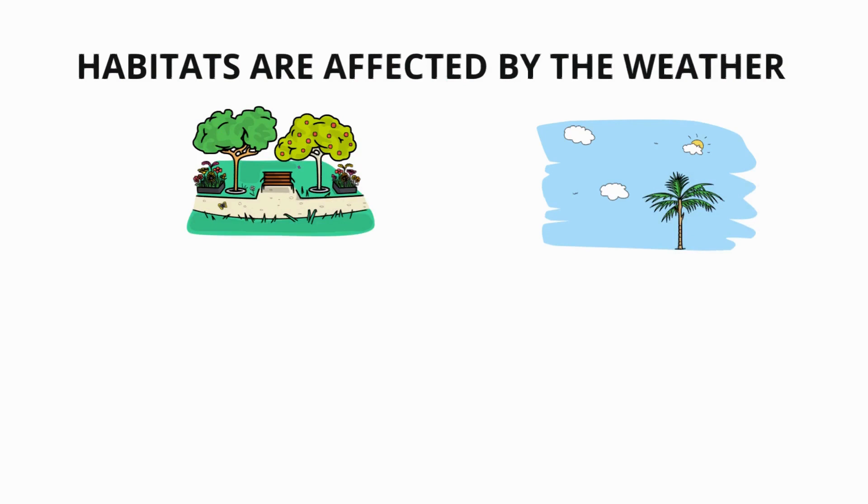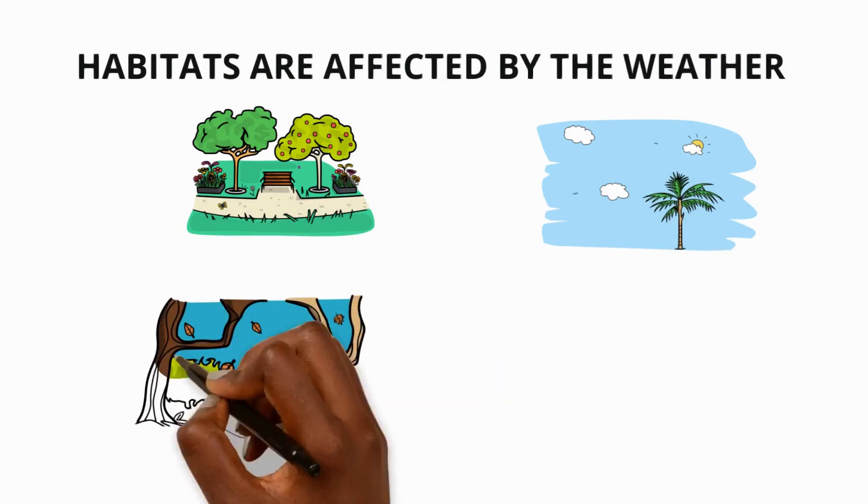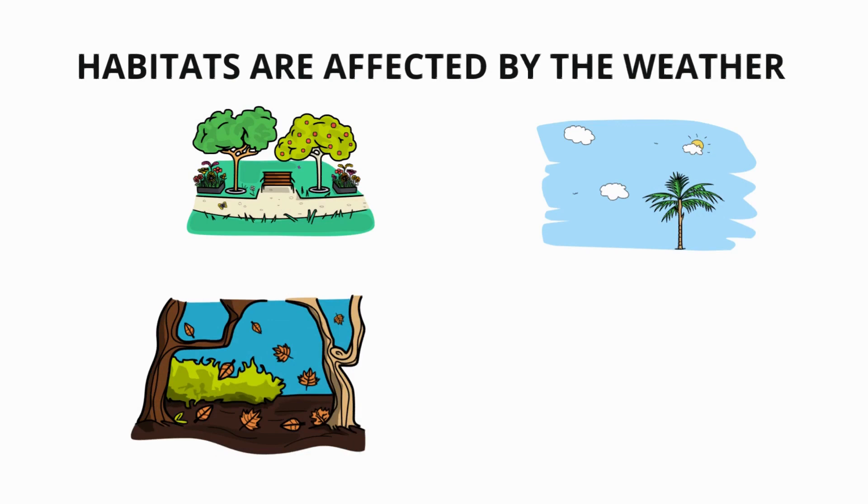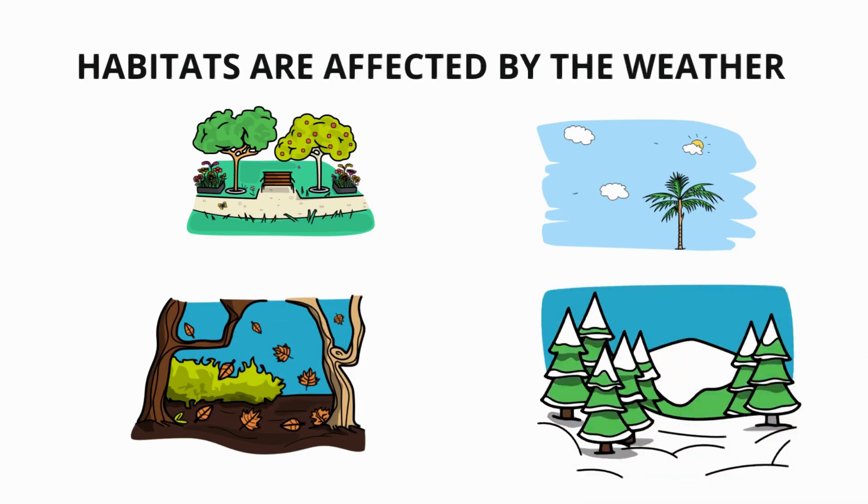For example the UK is a country with four seasons. During winter the weather is cool and wet and in summer it's warm and dry. The weather can affect living things in a number of ways.